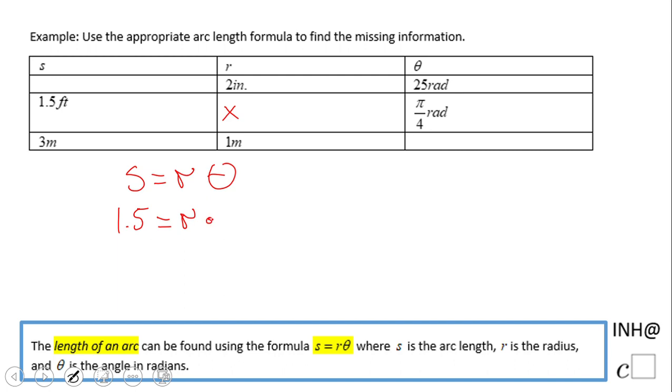We need to find the radius. I'll multiply by 4 over π to cancel out this π over 4, so the radius will be 4 over π.